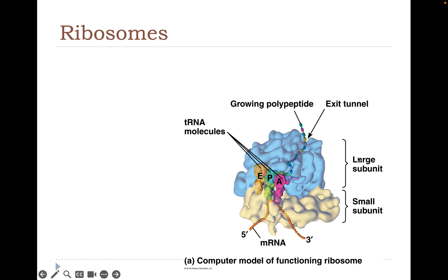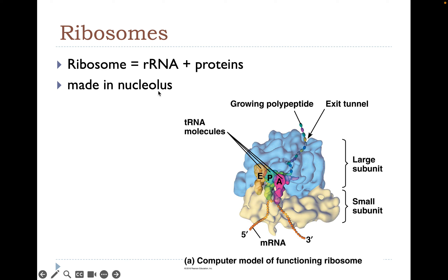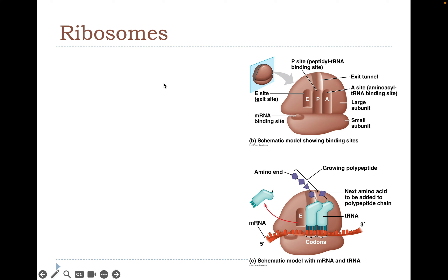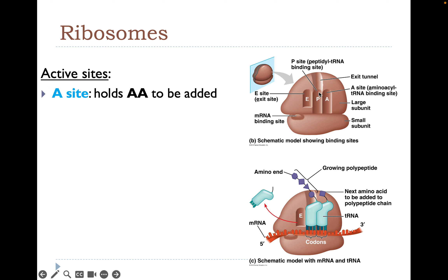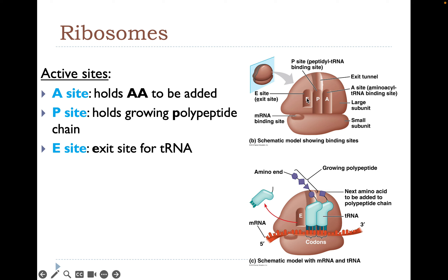Ribosomes have a large subunit and a small subunit. An mRNA molecule is fed through, and there are three tRNA sites. There's also an exit tunnel where the growing polypeptide chain feeds out. Ribosomes are made of RNA and proteins and are made in the nucleolus. Active site A holds the amino acid to be added; P holds the growing polypeptide chain and has an exit tunnel; E is the exit site for the departing tRNA.